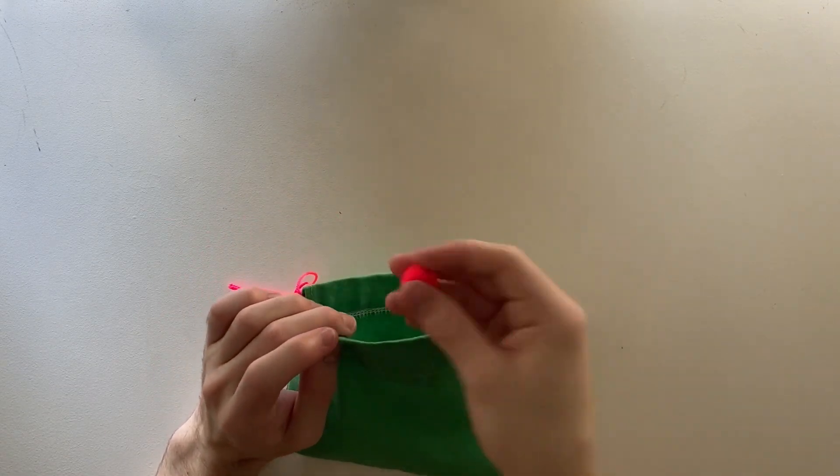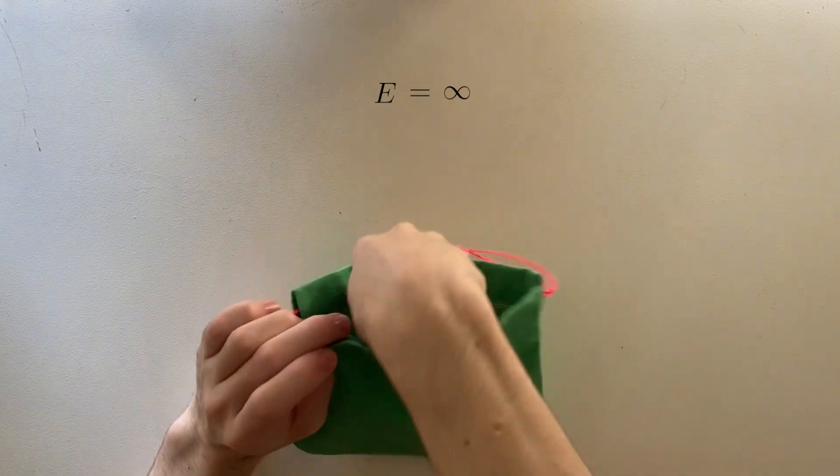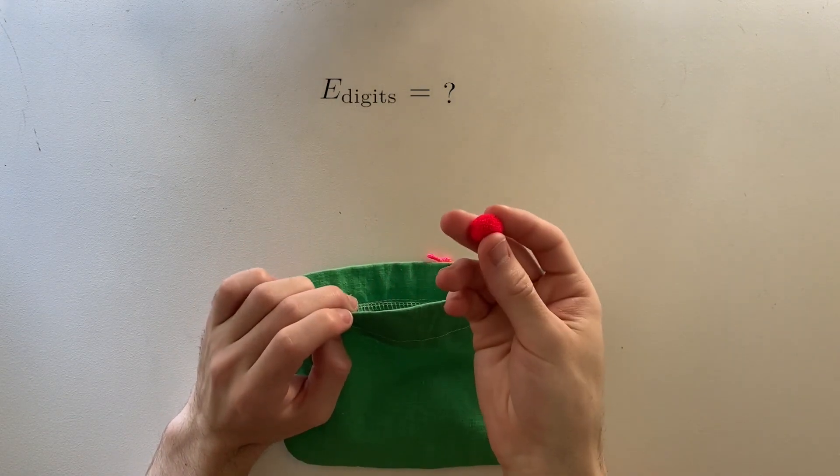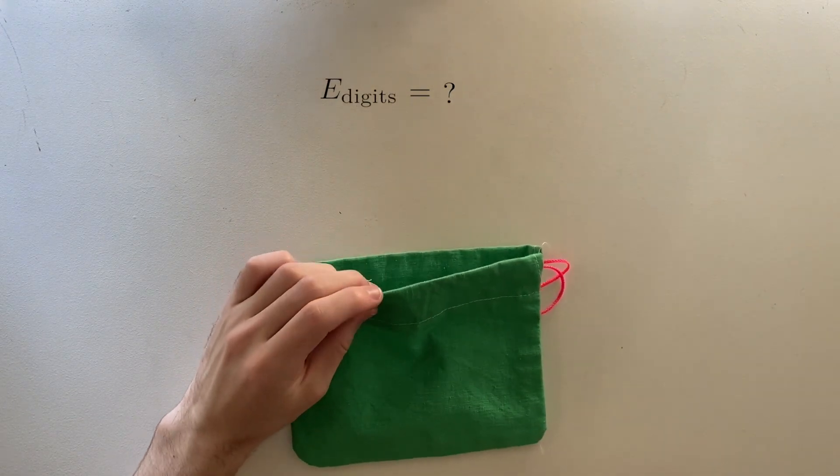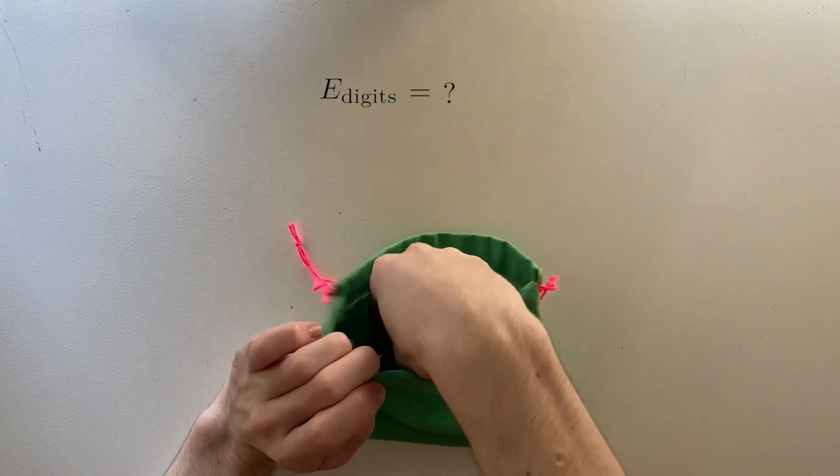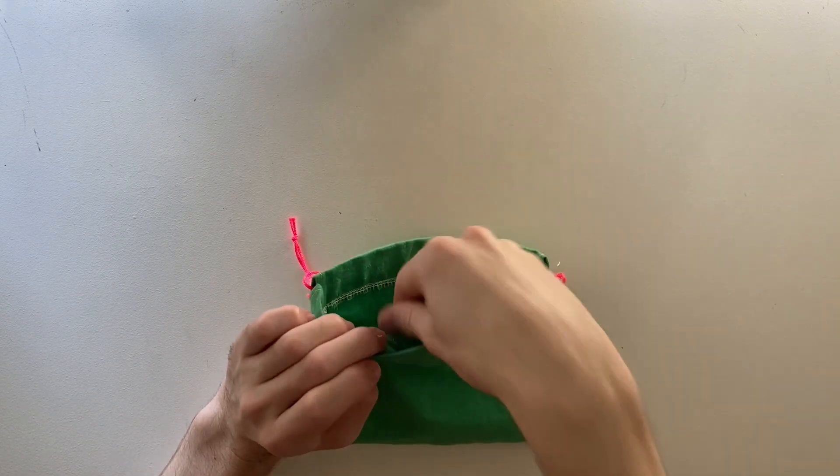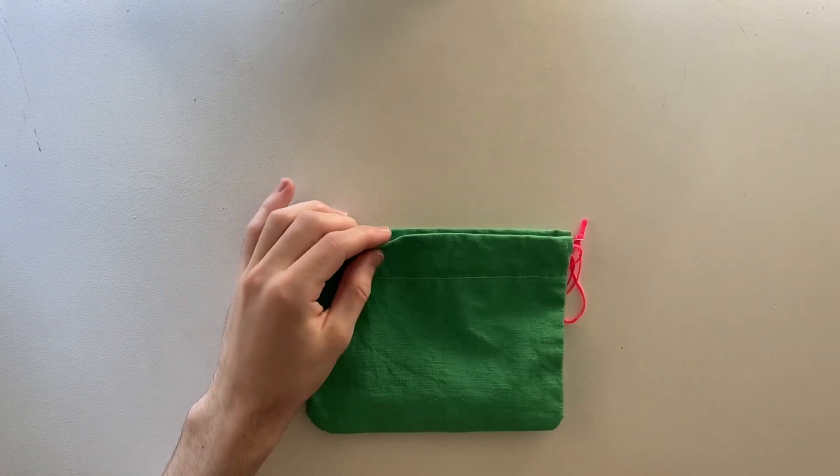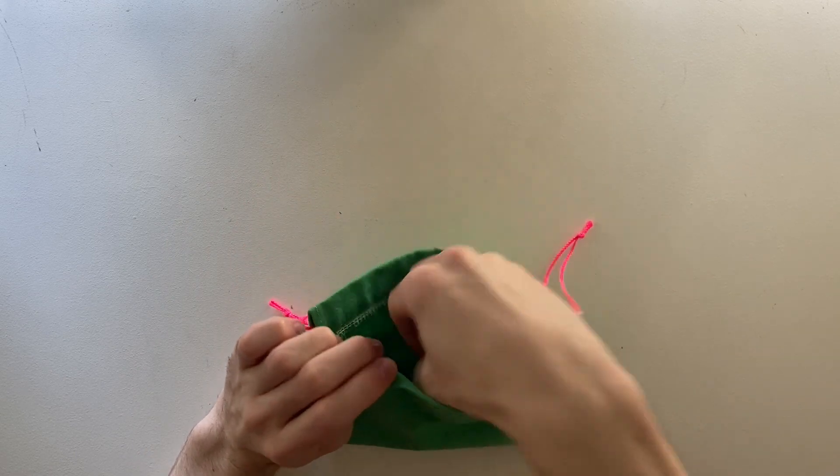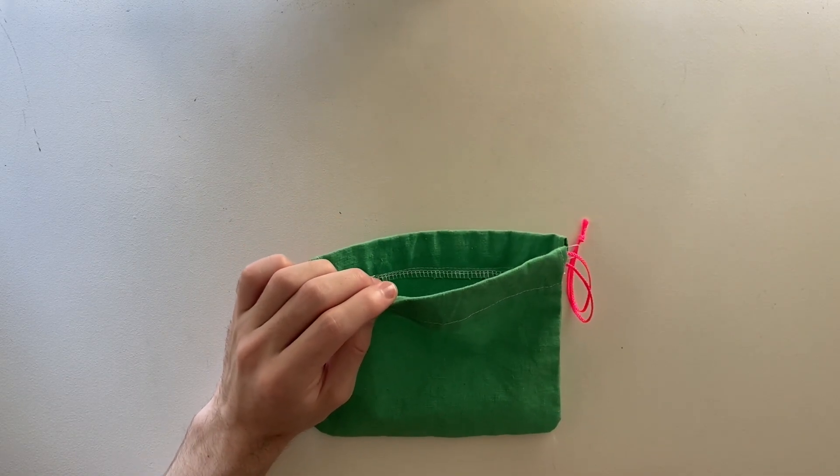So to finish off, I'm going to leave a challenge problem relating to this weird game of chance. The expected value for the number of rounds is infinite. But what's the expected value for the number of digits in the number of rounds? This value turns out to be finite. See if you can find it. Then, if you think that problem's too easy, see if you can find another random game of chance, which also always terminates, for which the expected value for the number of digits in the number of rounds is also infinite. It is possible.